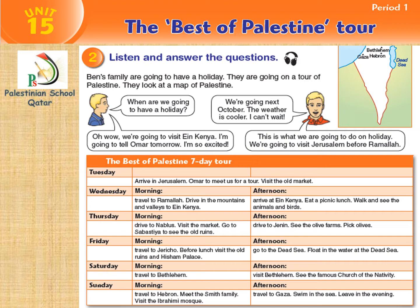Ben's family are going to have a holiday. They are going on a tour of Palestine. They look at a map of Palestine. 'When are we going to have a holiday?' 'We are going next October — the weather is cooler, I can't wait!' 'Oh wow, we are going to visit Akka! I am going to tell Omar tomorrow. I am so excited!' 'This is what we are going to do on holiday — we are going to visit Jerusalem before Ramallah.' The Best of Palestine, seven-day tour. Tuesday: arrive in Jerusalem, Omar to meet us for a tour, visit the old market.